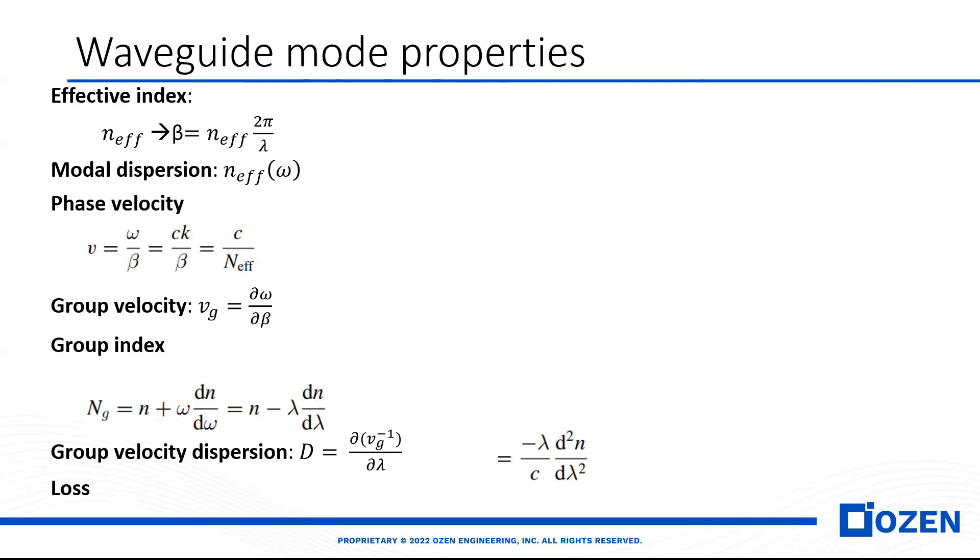If we have high group velocity dispersion, it means that this pulse, when we want to see the output, because we have different wavelengths with different velocities, at the output we can see that our pulse broadens in the time domain. This is the main concern for high-speed communication.